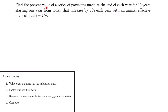For our example, we want to find the present value of a series of payments made at the end of each year for 10 years, starting one year from today, that increase by 5% each year with an annual effective interest rate of 7%. The rate r at which payments change is 0.05, the annual effective interest rate i is 0.07, and the number of payments n is 10. We'll say the original payment x is equal to $50.